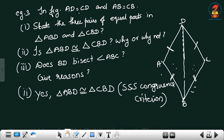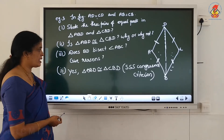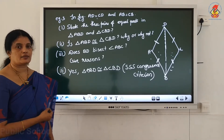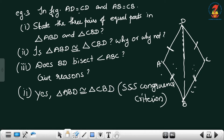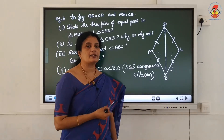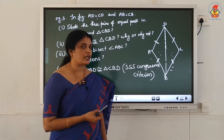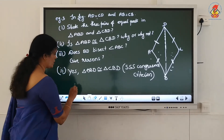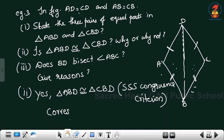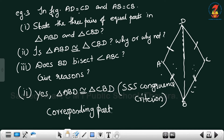Three sides are equal to another triangle's 3 sides, therefore these 2 triangles are congruent. Next: does BD bisect angle ABC? Give reason. If 2 triangles are congruent, corresponding parts are equal. What is the short form of 'corresponding parts of congruent triangles'? It is CPCT - corresponding parts of congruent triangles. If 2 triangles are congruent, then corresponding parts are also equal.